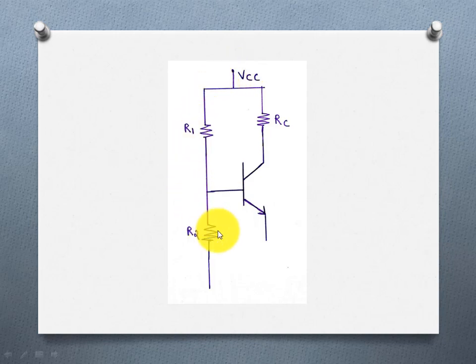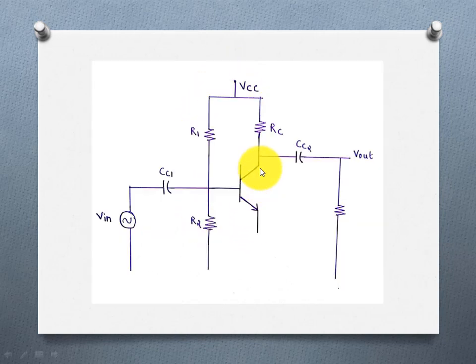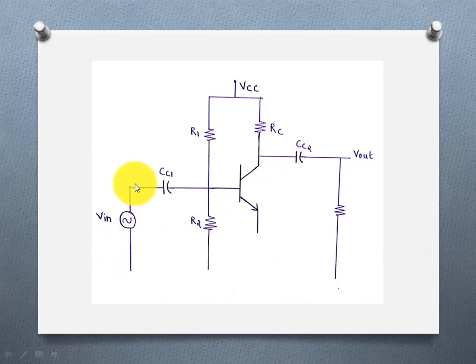The third step is the input. The input coupling capacitor is called C1. The input signal is applied through C1.